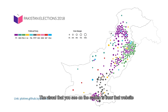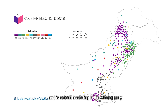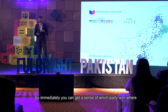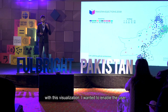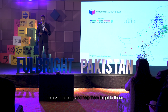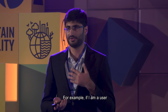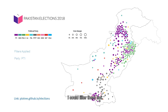The visual you see is a map with an assortment of colored bubbles on top. Each bubble corresponds to a seat in the National Assembly, colored according to the winning party and sized according to the winning party's vote margin. So immediately you can get a sense of which party won where in Pakistan. I wanted to enable the user to ask questions — for example, if I'm interested in seats won by PTI, I could filter them out.